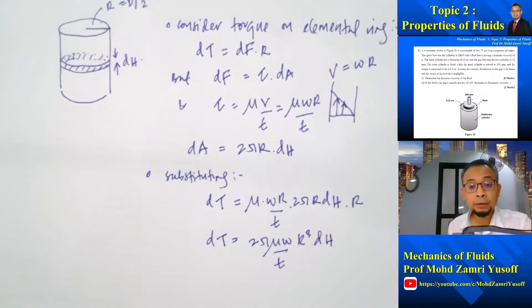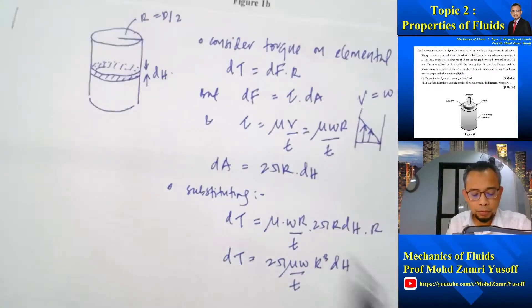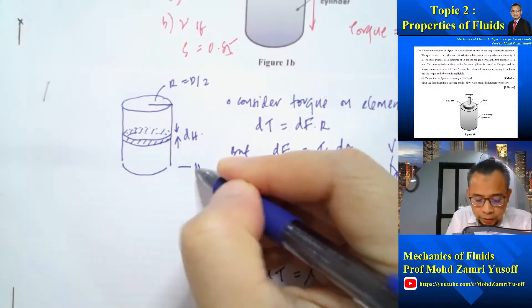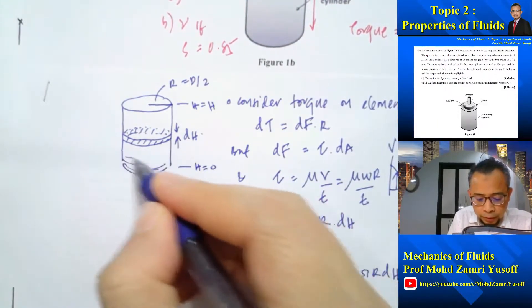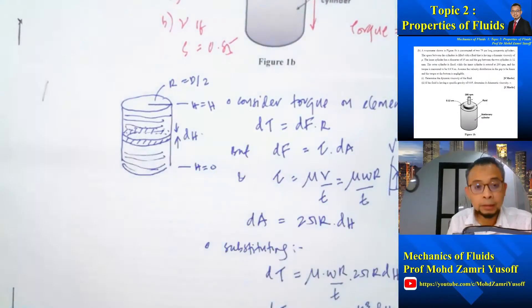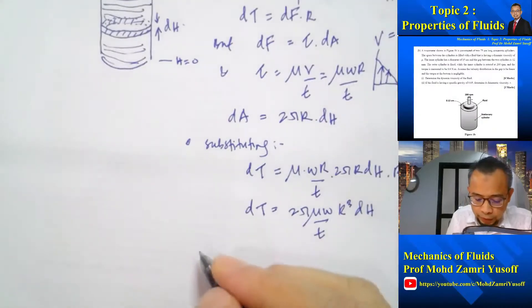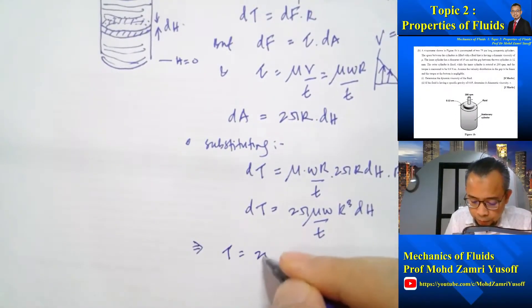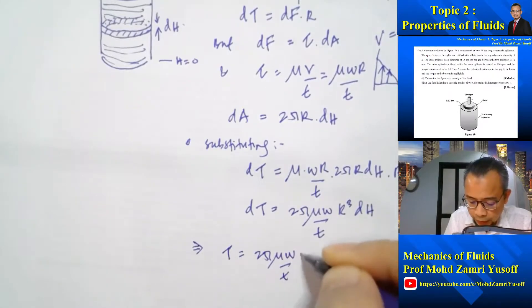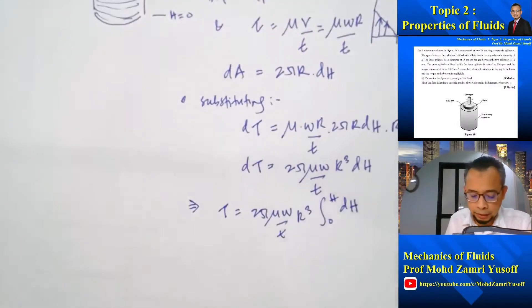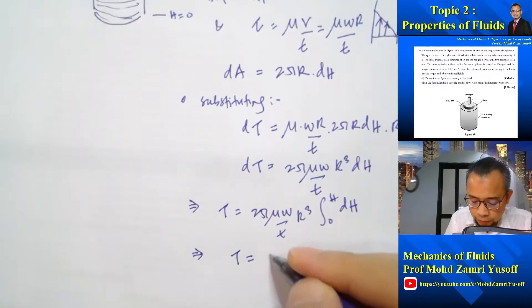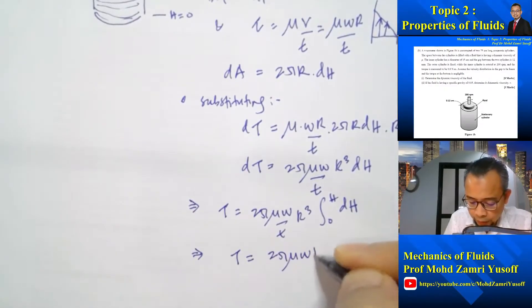So now in order to get the torque for the whole cylinder, I have to integrate from H equal to 0 to H equal to H so that I cover the whole of this cylinder. So that gives me total tau is equal to 2 pi mu omega over d r cubed from 0 to H dH. So that gives me tau is equal to 2 pi mu omega r cubed over d H.